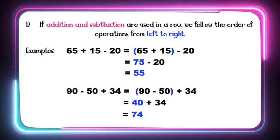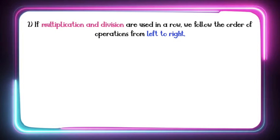Let's have the second rule. If multiplication and division are used in a row, we follow the order of operations from left to right. So we are going to use left to right again. If multiplication and division are used in a row, we follow the order of operations from left to right. Let's have an example.